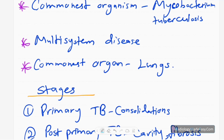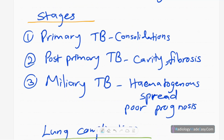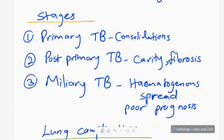In primary pulmonary TB, the main findings are consolidations and lymphadenopathy. It can affect any part of the lungs, mainly the upper lobes, with Ghon's complex formation. In post-primary TB, there is cavity formation and fibrosis due to reactivation of primary TB. It mainly affects the apical and posterior segments of both upper lobes and the superior segments of the lower lobes. The main feature is cavity formation and fibrosis; consolidations and lymphadenopathy can also occur.